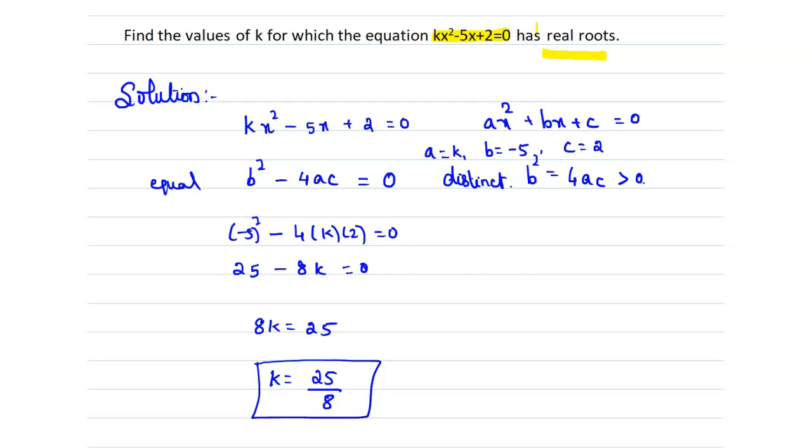If there exists two equal real roots then the value of k is 25/8 for the given equation. Suppose we are considering two distinct roots that is b² - 4ac > 0.